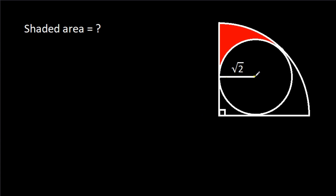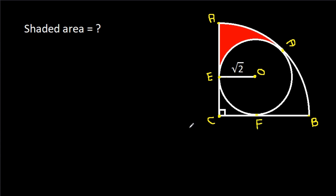Suppose the center of the circle is O, and the center of the quarter circle is C, and suppose this point is A, this point is B, this point is D, this point is E, and this point is F.